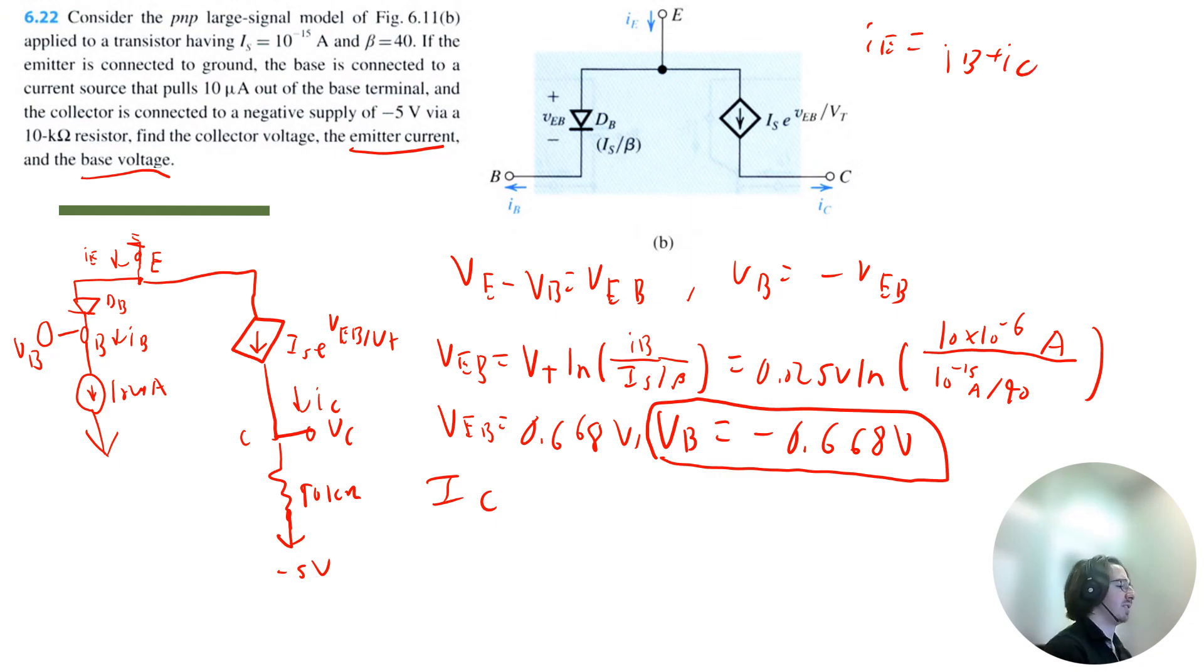So I need to figure out what IC is. Now, I could use this equation here, but I can also just multiply beta times IB to get 40 times 10 microamps to get 400 microamps. So therefore, the emitter current is equal to 10 microamps plus 400 microamps. So that's going to be equal to 410 microamps, which is also 0.41 milliamps.